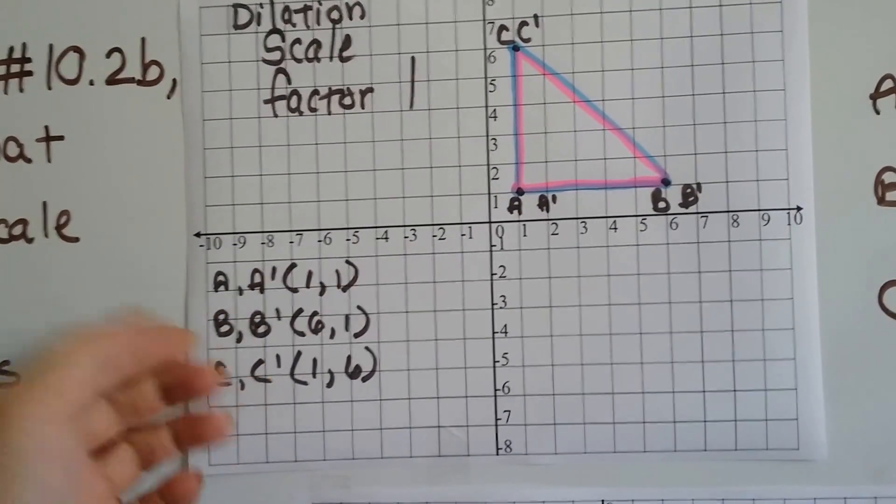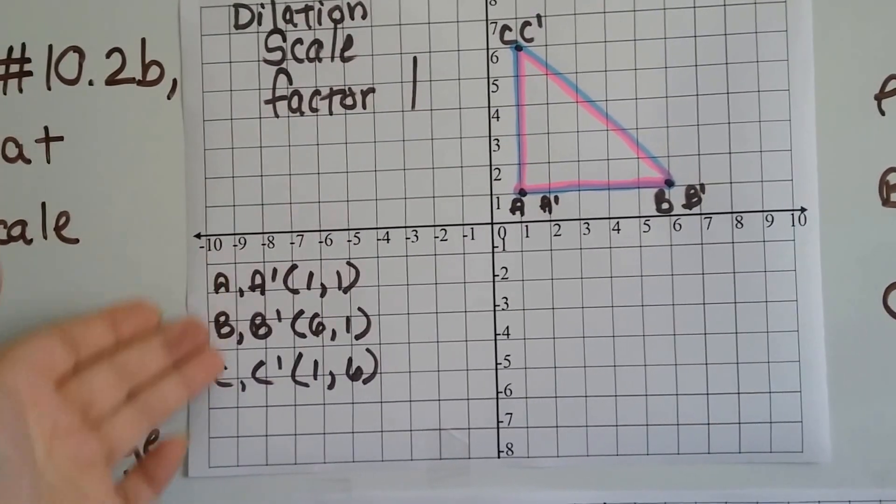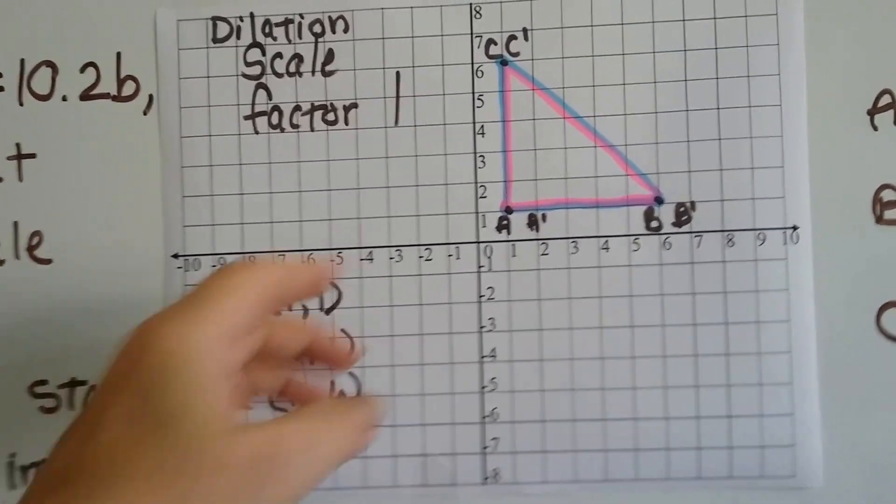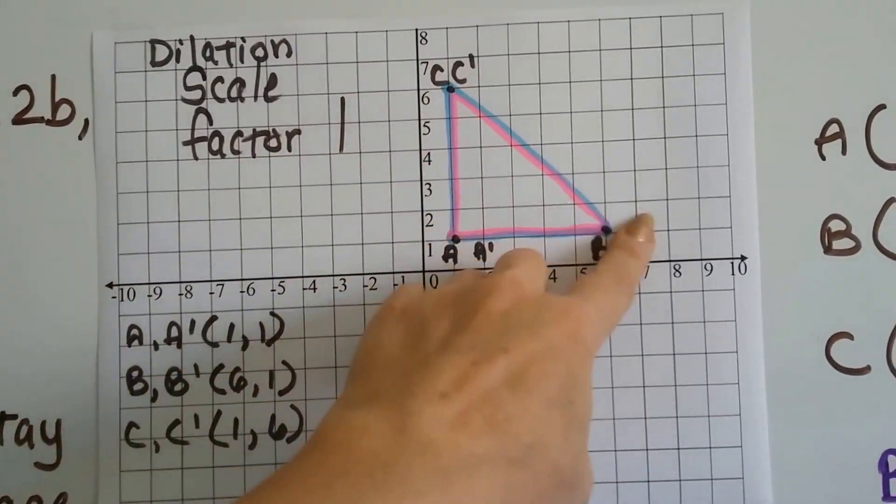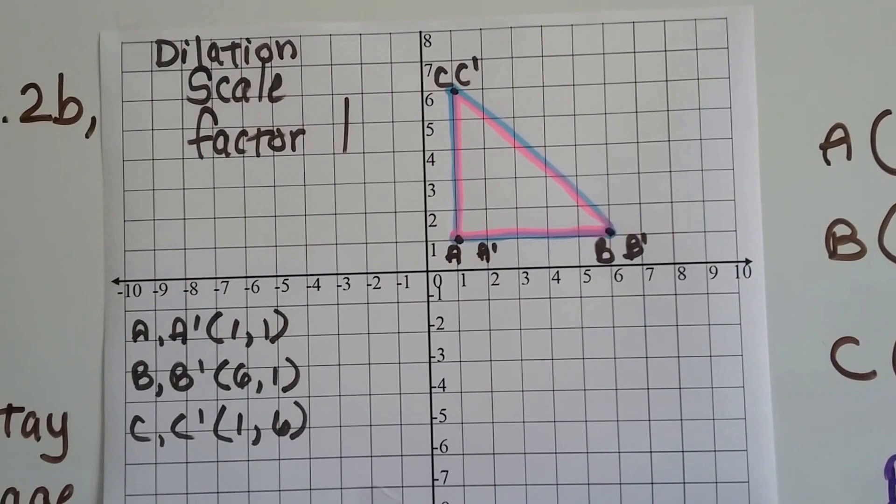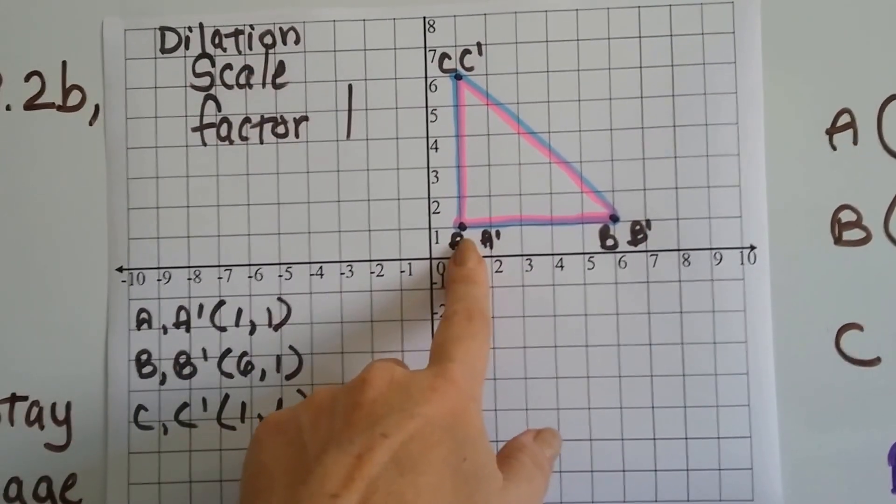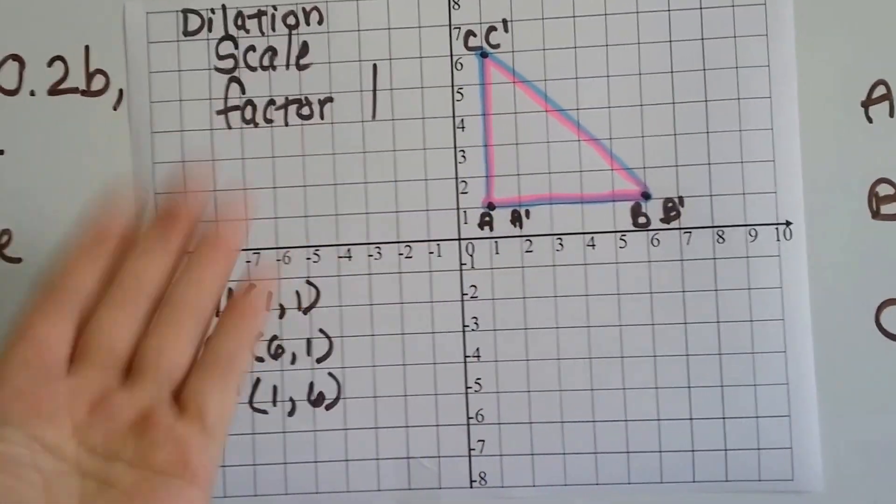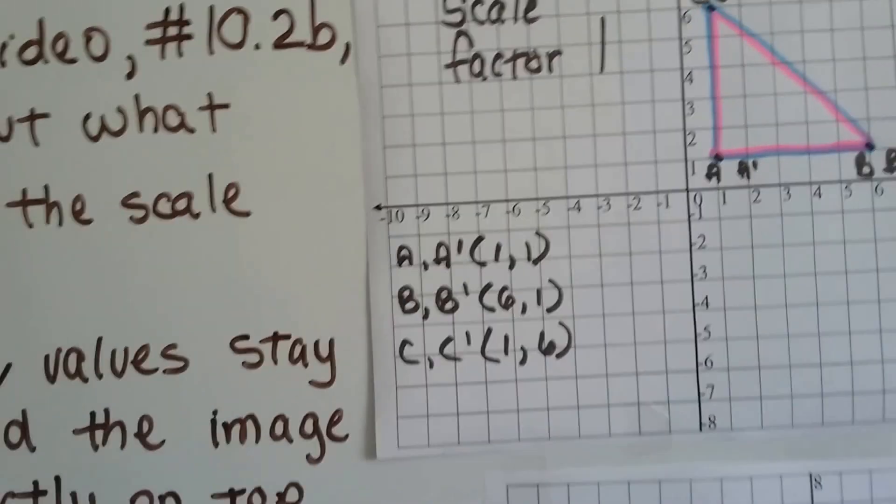So A prime, B prime, C prime are going to be exactly the same as the pre-image ABC. When we draw them they're just going to lay right on top of each other. They'd share the same vertices because it's a scale factor of 1.